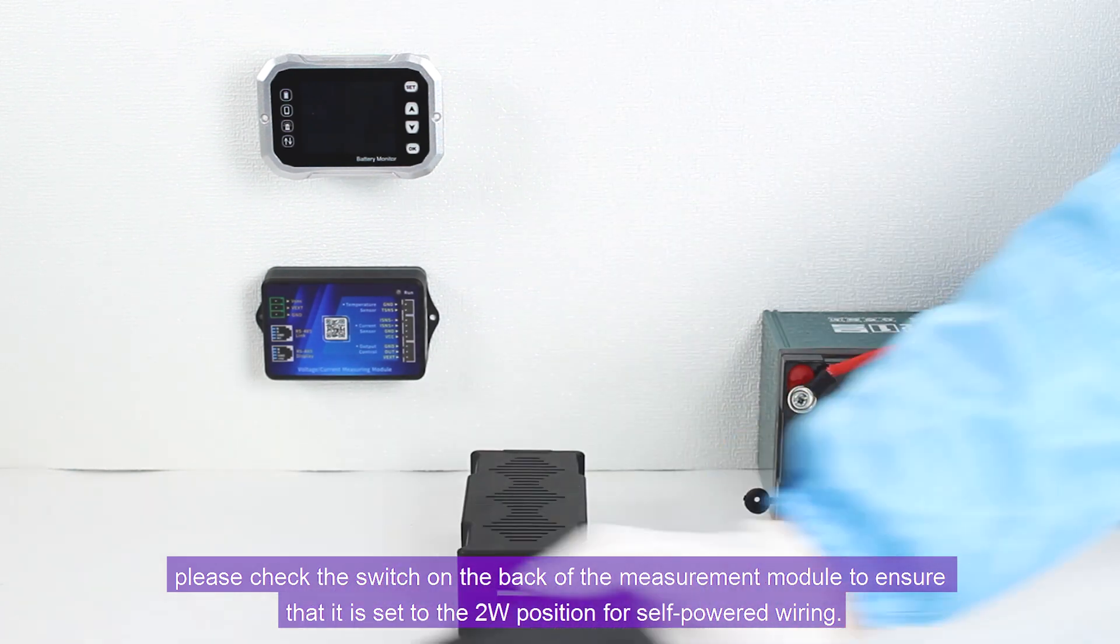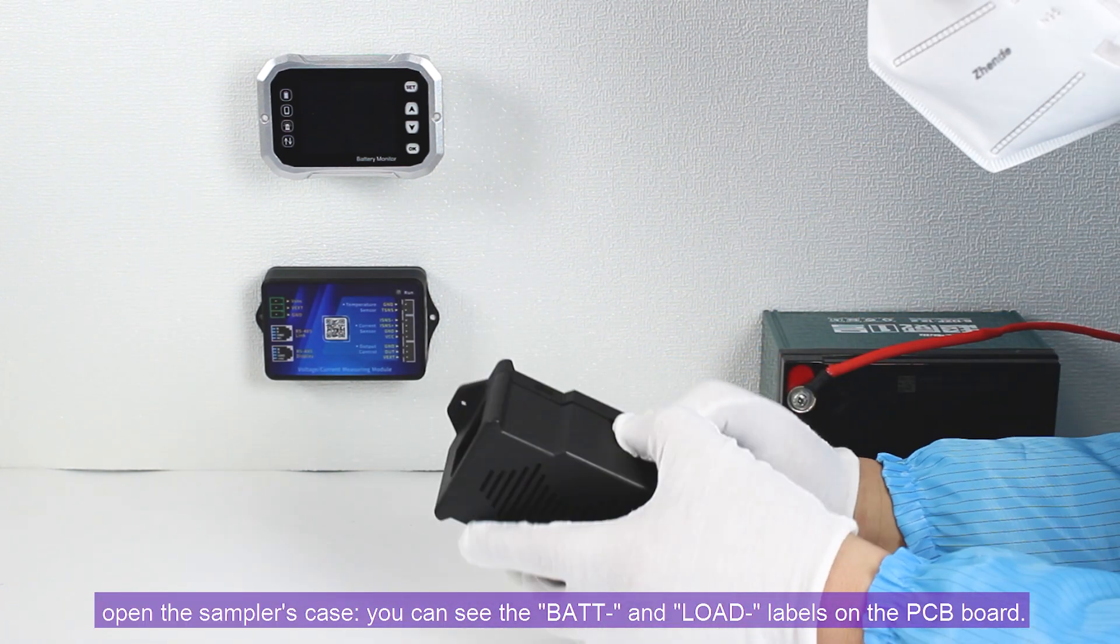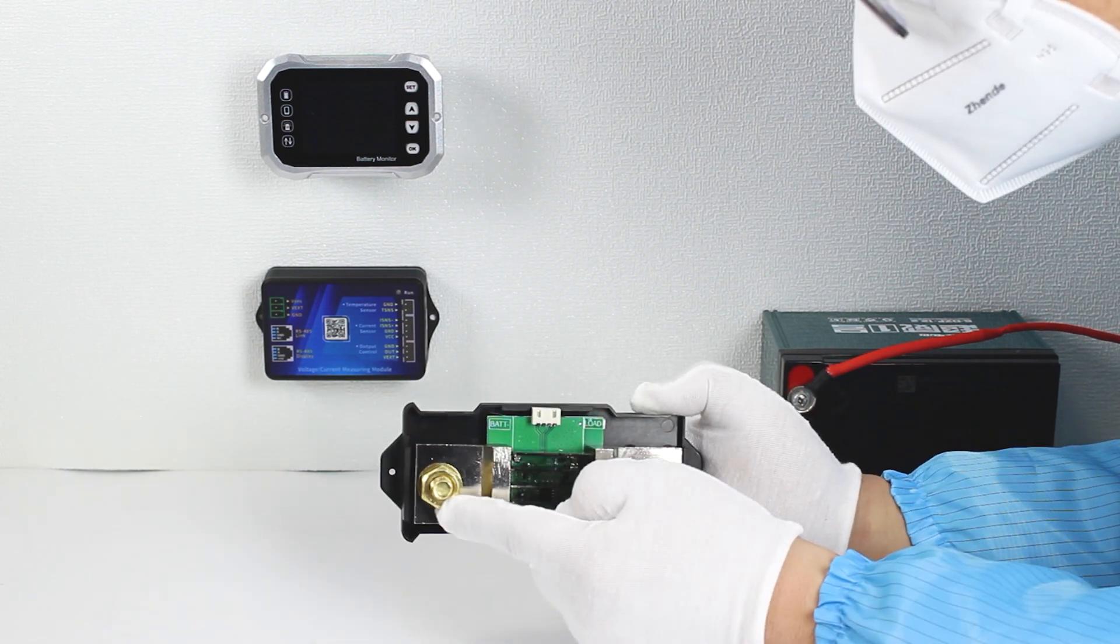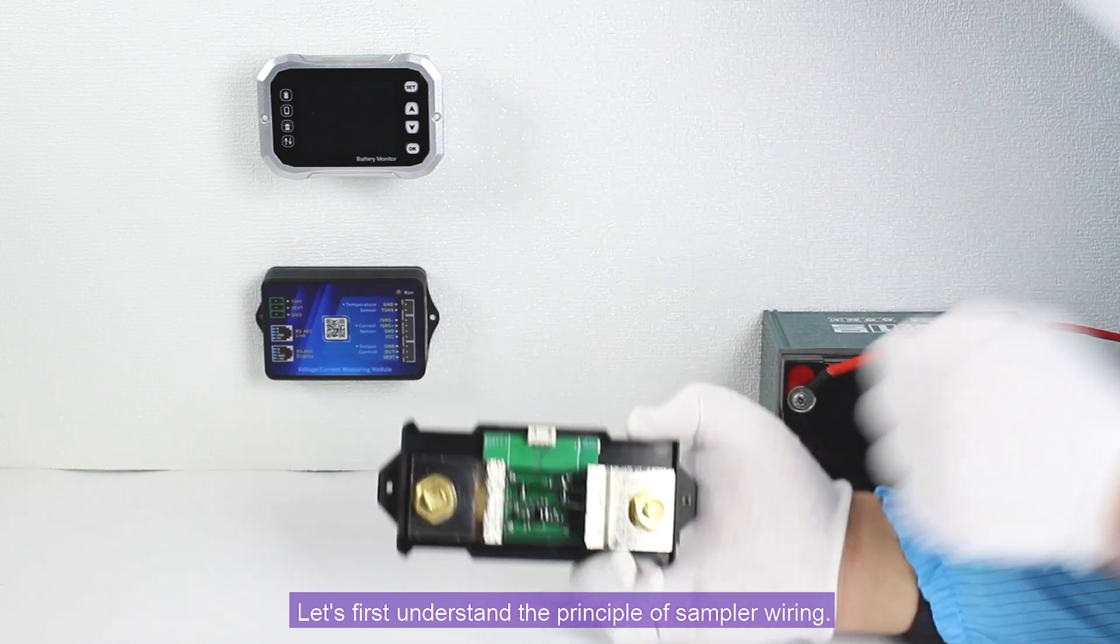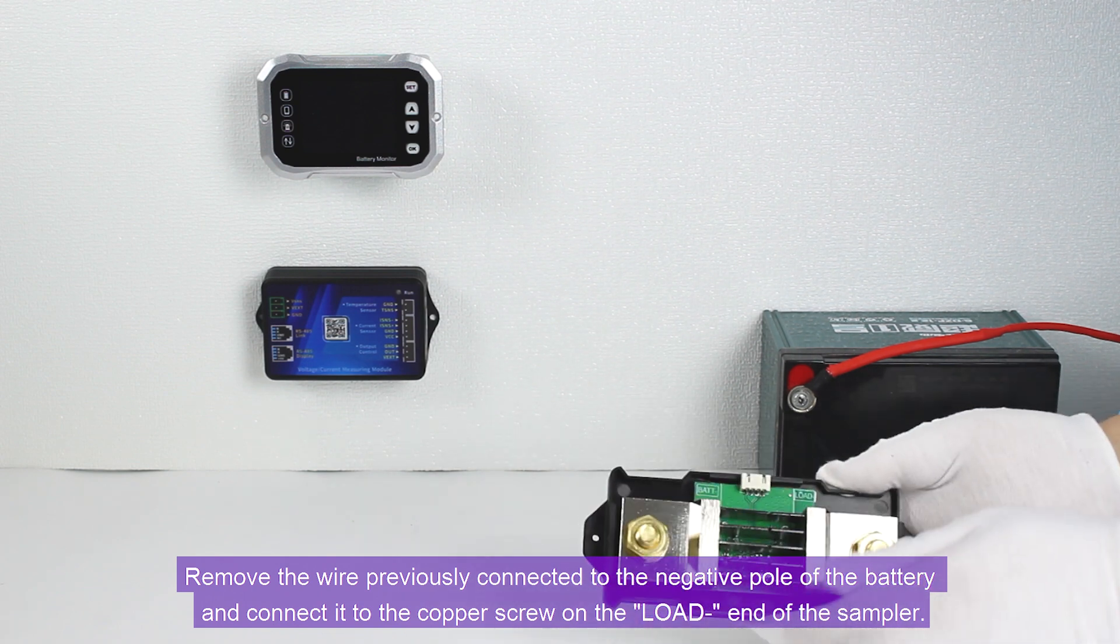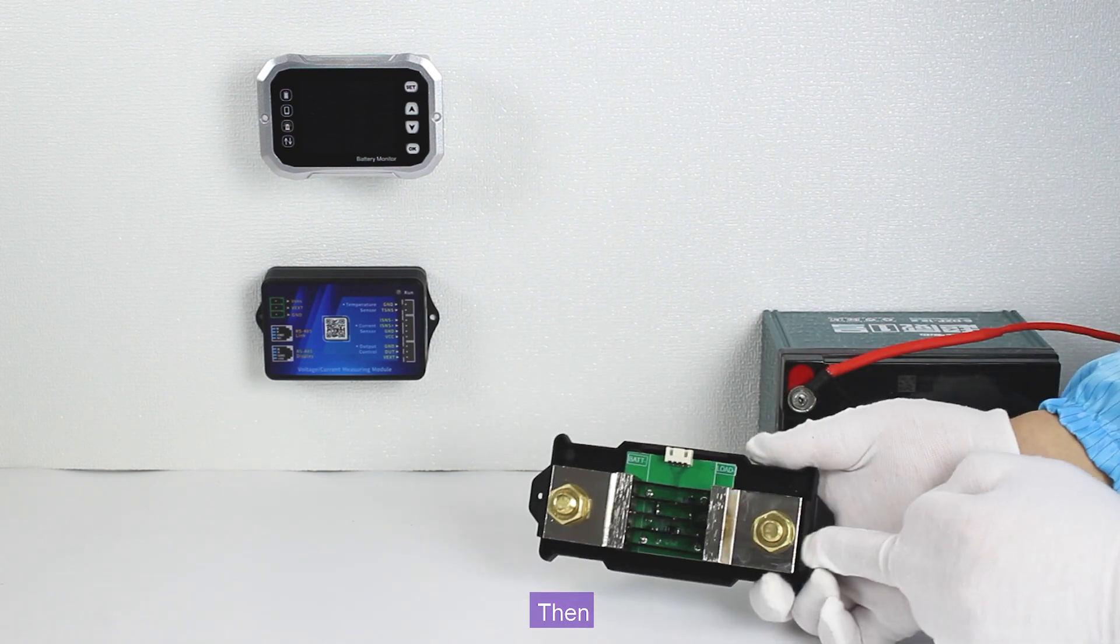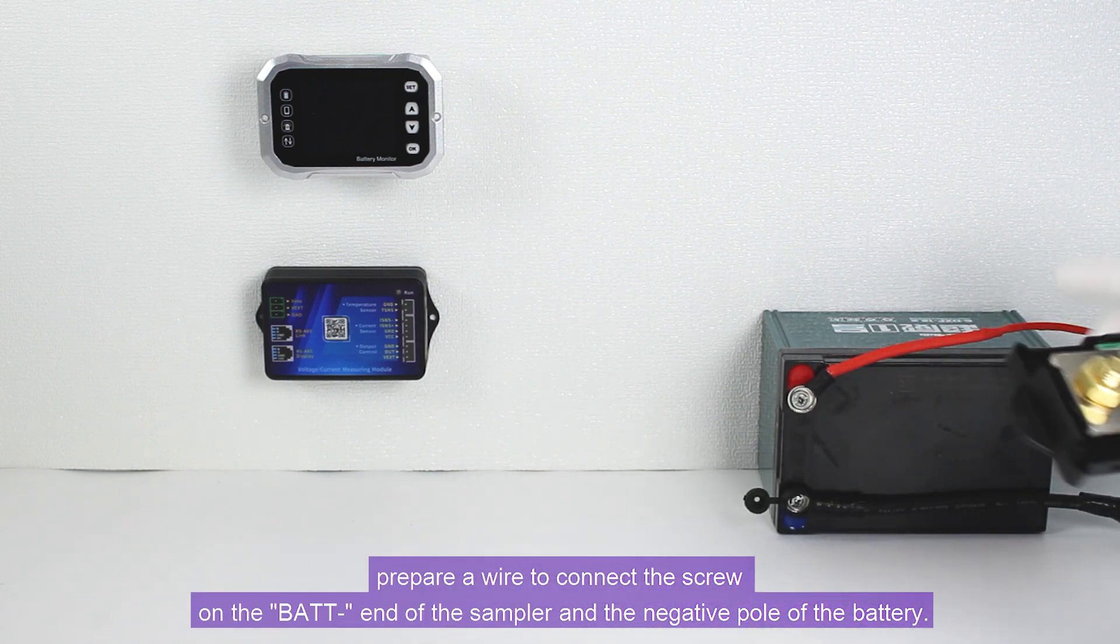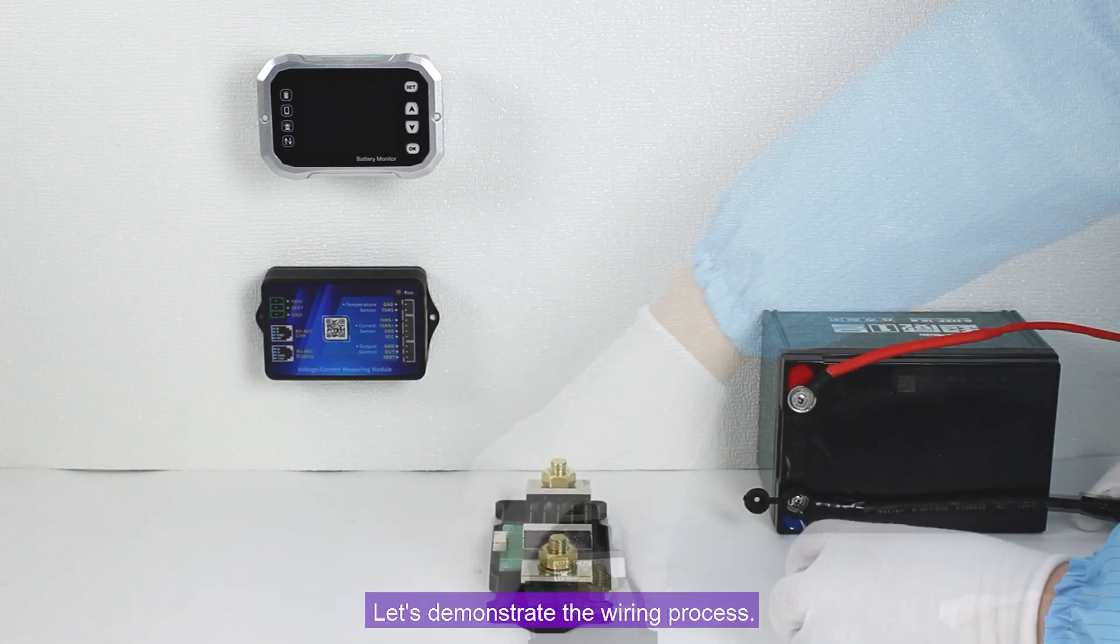Next, open the sampler's case. You can see the BAT and LOAD labels on the PCB board. Let's first understand the principle of sampler wiring. Remove the wire previously connected to the negative pole of the battery and connect it to the copper screw on the LOAD end of the sampler. Then prepare a wire to connect the screw on the BAT end of the sampler and the negative pole of the battery.